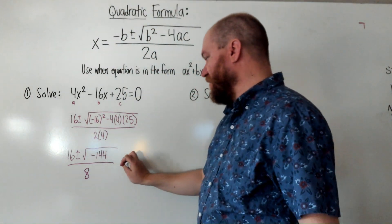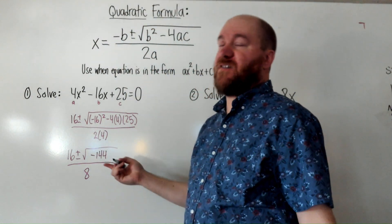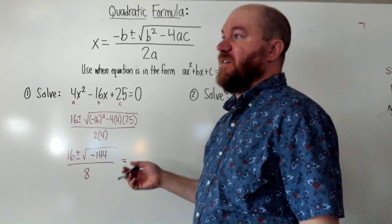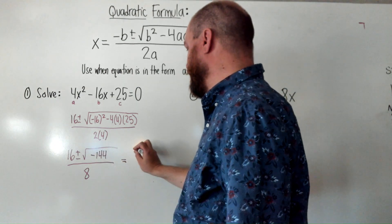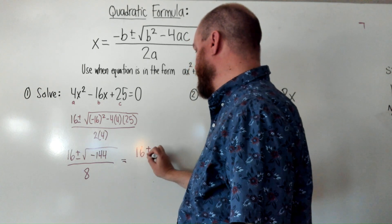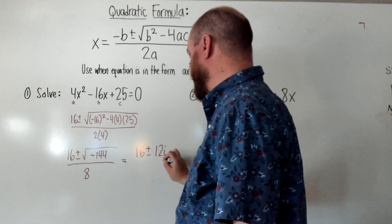Now, remember, when you have a negative square root, as long as it's a perfect square, you can still answer it. You just have to attach an i because it's negative. So, that'll be 16 plus or minus 12i over 8.